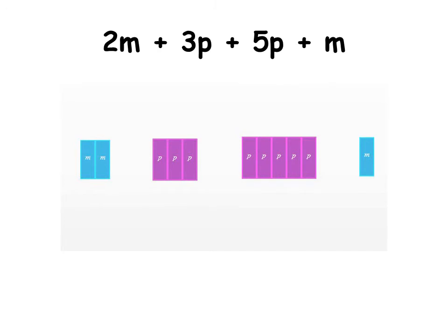What about this one? This one looks a bit more tricky. Here, how many different variables do we have? We have an M and a P, yeah? So we have P's and we have M's. What are we going to do in this case, students? All right, let me demonstrate what we're going to do.